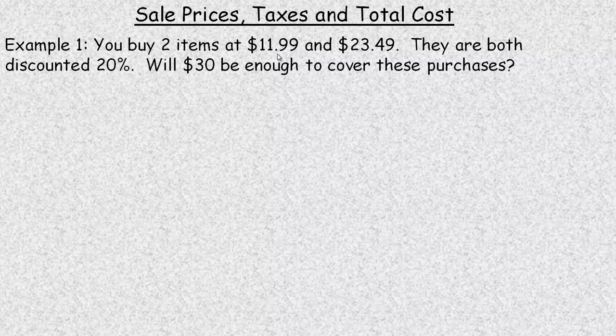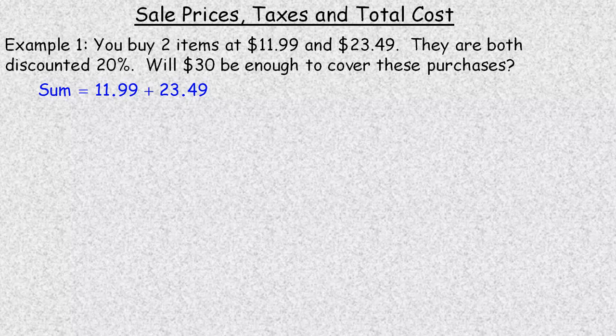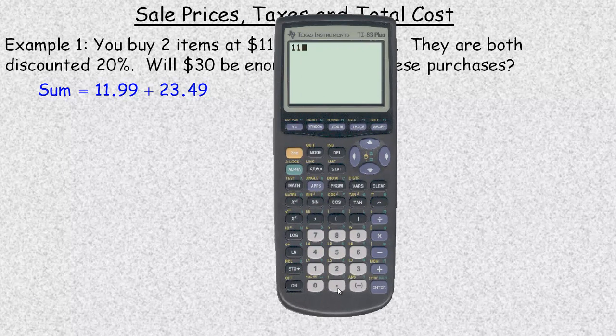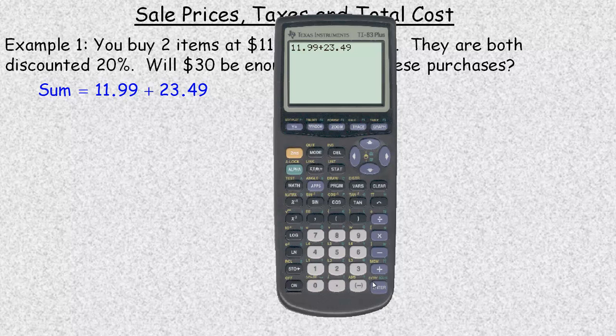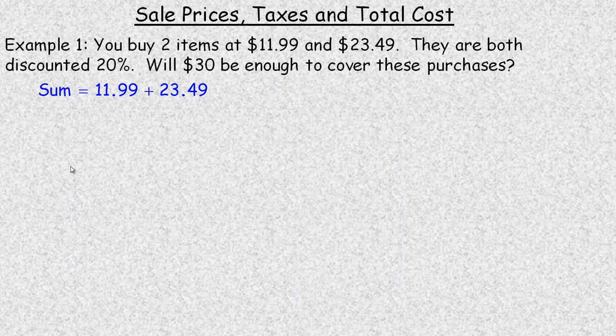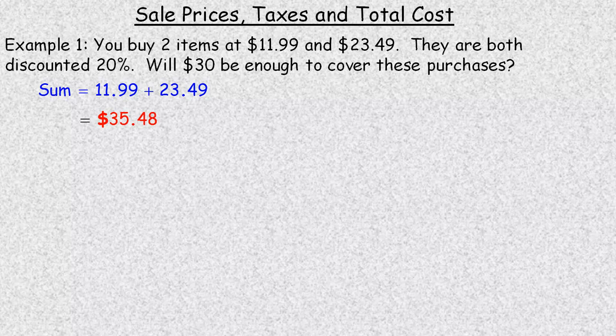In the first example, you buy two items at $11.99 and $23.49. They are both discounted 20%. You're asked will $30 be enough to cover these purchases? The first thing we need to do is find out how much the two of these cost together. So we add up the $11.99 and $23.49 in the calculator, and we get $35.48.